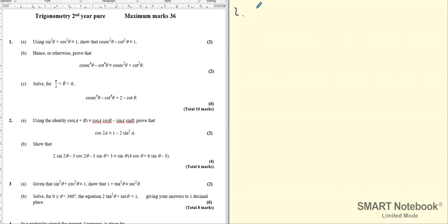So again, we need to start off with the identity for cos(A + B), the addition rule for cos. So now looking at this, we need to understand that cos2A can be written as cos(A + A).